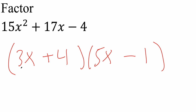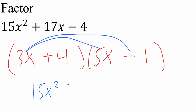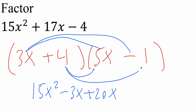We can further check by expanding. 3x times 5x is 15x squared. 3x times negative 1 is negative 3x. 4 times 5x is 20x. And 4 times negative 1 is negative 4. We can see if it matches: 15x squared matches, negative 4 matches, and negative 3x plus 20x is in fact positive 17x. So that's how we know it's correct.